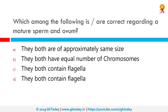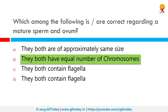Which among the following is or are correct regarding a mature sperm and ovum? The correct option is option B, which says that they both have an equal number of chromosomes. The number of chromosomes in a human being is 46, that is 23 pairs, but it is reduced to 23 during the process of meiosis. In a human egg or sperm there are 23 chromosomes, one of which is an X or a Y. A human egg is haploid with 23 chromosomes, and a sperm is also haploid with 23 chromosomes.